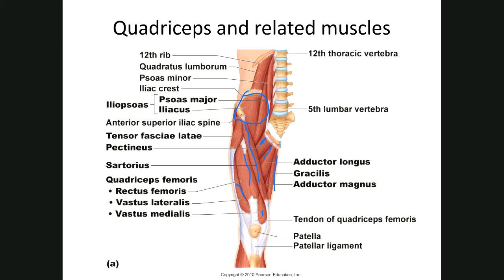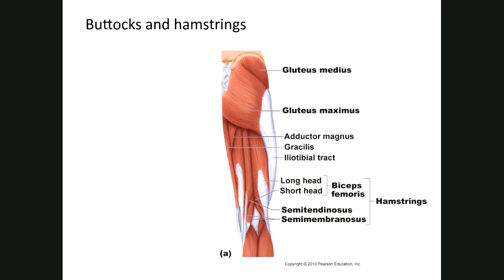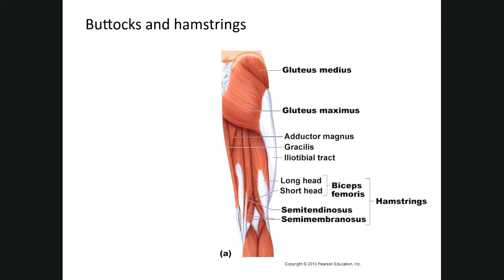The iliopsoas is here, and your adductor muscles include pectineus, adductor longus, adductor magnus, and gracilis. This view shows adductor magnus dissected out in more detail along with adductor longus.